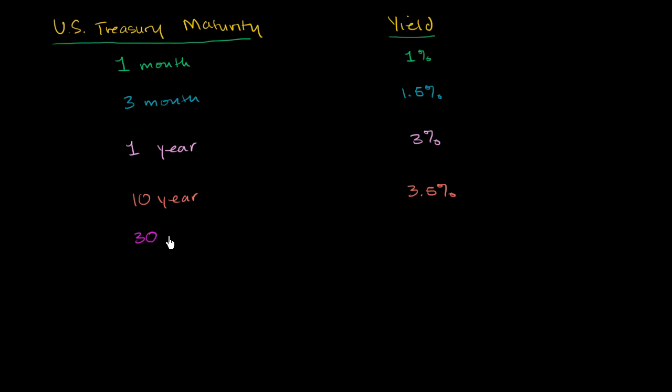And let's throw one more up here. Let's say if you were to lend money to the U.S. government for 30 years, the yield is running at, let's say it's 4%. So here we have different yields for different maturities.